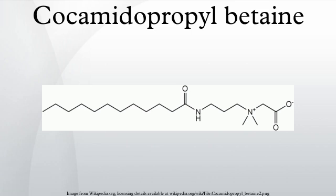It is however prepared by combining chloroacetic acid with the amide derived from dimethylaminopropylamine and lauric acid: CH3(CH2)10C(O)NH-CH2CH2CH2-N(CH3)2 plus ClCH2CO2H plus NaOH yields CH3(CH2)10C(O)NH-CH2CH2CH2-N+(CH3)2-CH2CO2- plus NaCl plus H2O.